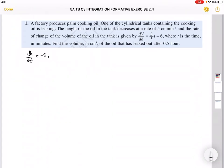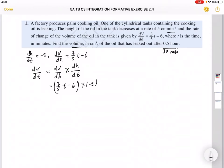Now the rate of change of the volume is given by dV/dh equals 3/5t minus 6. Now you need to find the volume after 0.5 hours, but please take note this is in minutes, so you have to convert this to minutes. 0.5 hours is basically 30 minutes. So you need to find dV/dt first. Now we know dV/dt by using chain rule is dV/dt equals dV/dh times dh/dt.